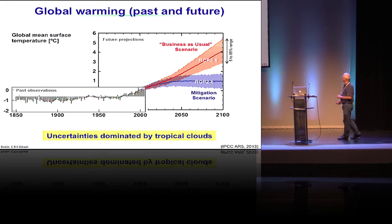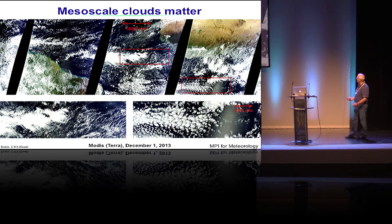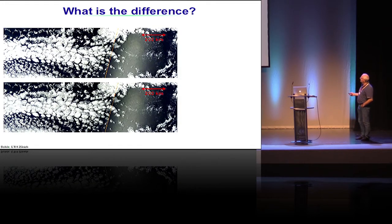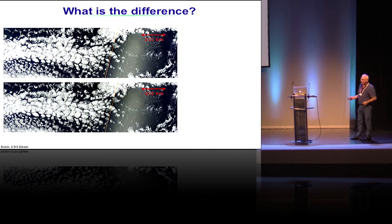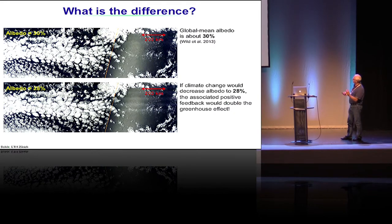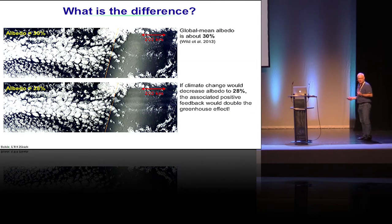I'll show a few arguments why this is important. Looking at one satellite picture, we pick two cloud structures: one showing deep convective clouds reaching the tropopause, and one showing shallow convection. Now consider what this means for the climate system. The difference between two figures is that in the top diagram I've assigned an albedo of about 30%, which is the global mean albedo, and in the lower diagram an albedo of about 28%. It's just a rescaling of the brightness, and it's hard to see the difference.